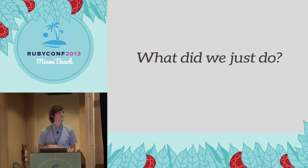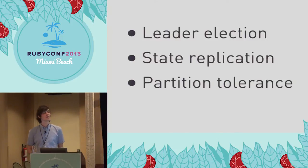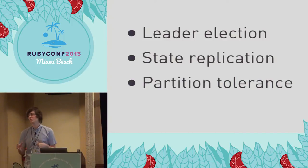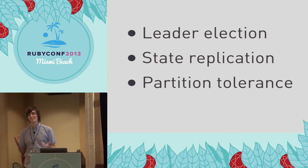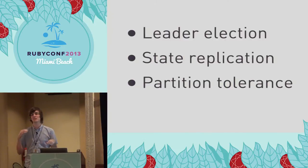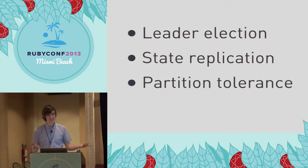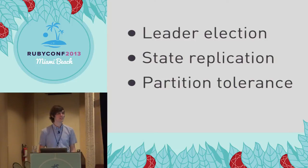But if we really try to break it down into different concepts of what just happened, we could say we did a form of leader election where Matt kind of initiated the conversation, handled who was going, and made the decisions on when they were going to go. We also did state replication — Matt made a decision and then everyone else heard about it and stored it in their brain. And we also had a partition, right? Dan was asleep, didn't really hear what was going on. But when he woke up, everything was fine and he got up to speed without any problems.